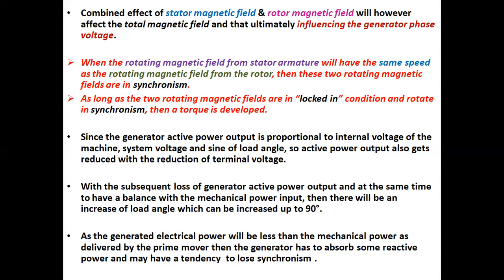With the subsequent loss of generator active power output, and at the same time to have a balance with the mechanical power input, there will be an increase of load angle, which can increase up to 90 degrees. As the generated electrical power will be less than the mechanical power as delivered by the prime mover, the generator has to absorb some reactive power and may have a tendency to lose synchronism.